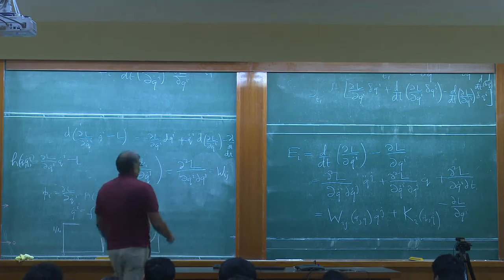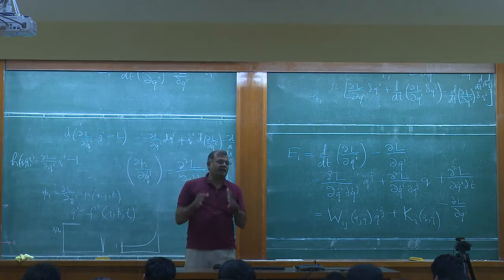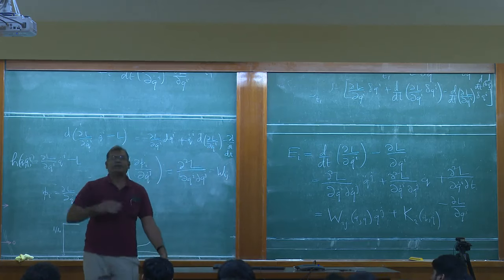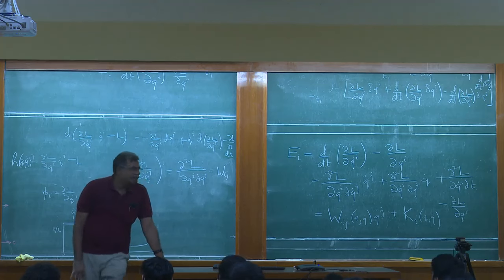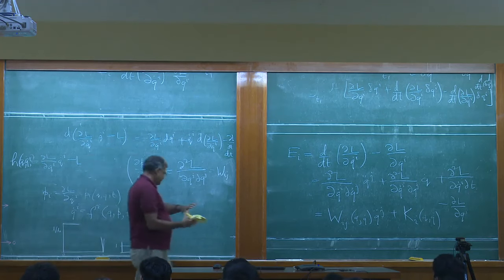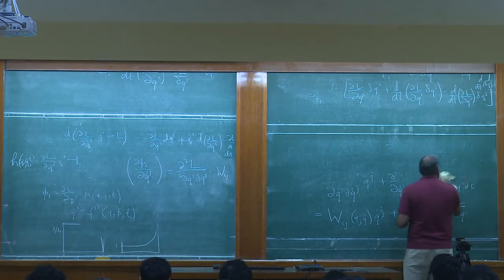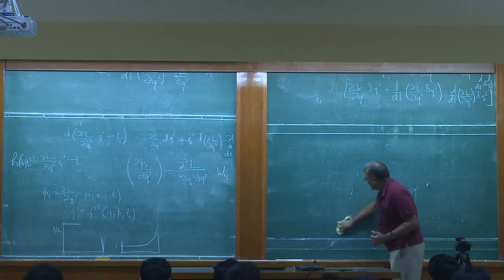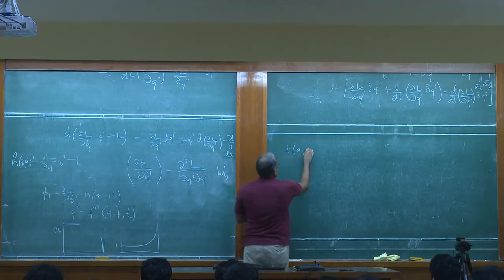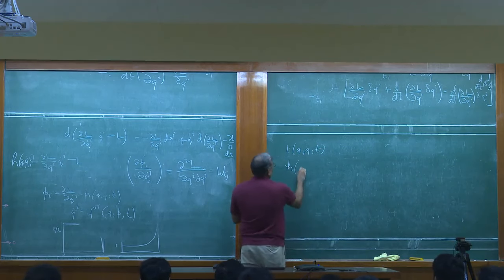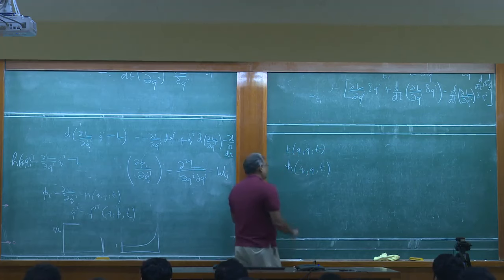If Wij is singular, the Lagrangian formulation itself has a problem — you don't get enough independent equations for the second-order differential equations, the q̈'s can't be solved for. And also the same problem persists when you try to go to the Hamiltonian.